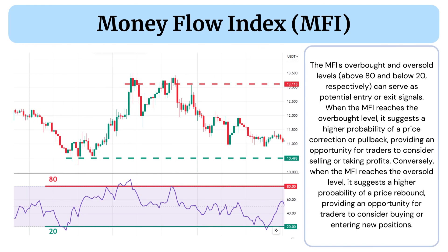The MFI overbought and oversold levels — above 80 and below 20 respectively — can serve as potential entry or exit signals. When the MFI reaches the overbought level, it suggests a higher probability of a price correction or pullback, providing an opportunity for traders to consider selling or taking profits.